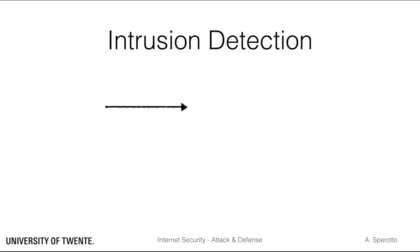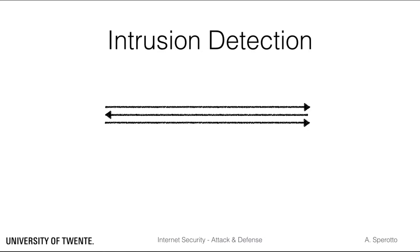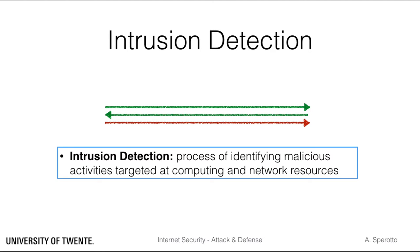Let's assume we have a communication flowing between endpoints in a network. These communication flows will carry either benign traffic or malicious traffic, that is, traffic aimed at compromising the correct functioning of network and services. The process of identifying malicious activities targeted at computing and network resources is referred to as intrusion detection.